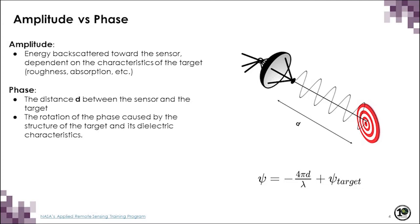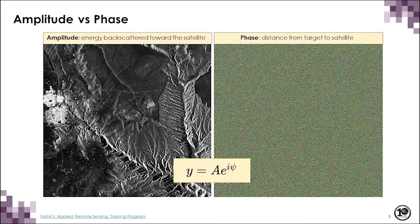The phase provides information on the distance between the target and the sensor. Every time the wave moves 23 centimeters — the length of the wave — it is equivalent to a sinusoidal cycle or 2π. Since the wave must go to the target and return to the sensor, the term 4π appears in the phase equation, which relates the phase of a SAR image with the distance to the target. On the left is an amplitude image, which looks similar to an optical image, and on the right is the phase information of a SAR image.